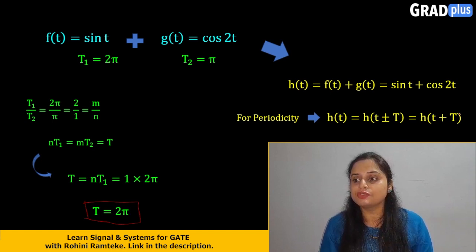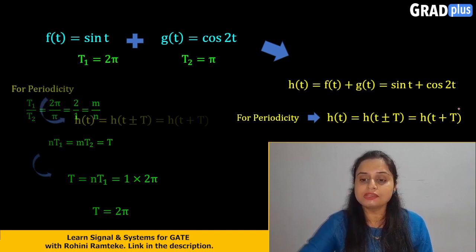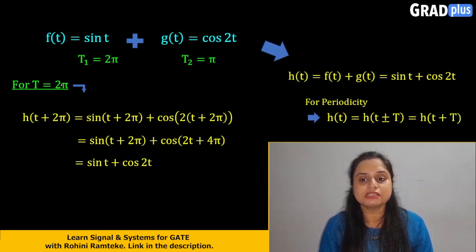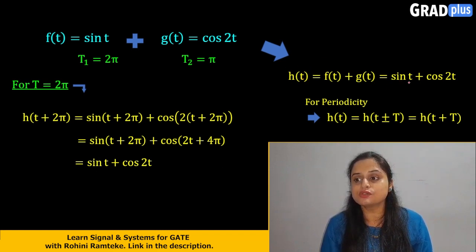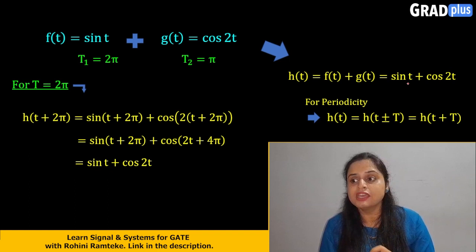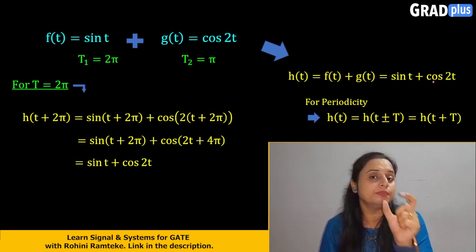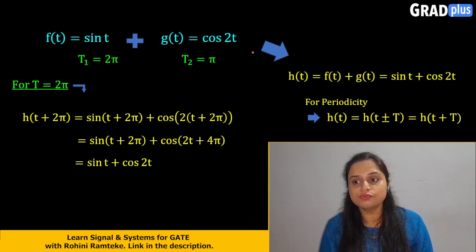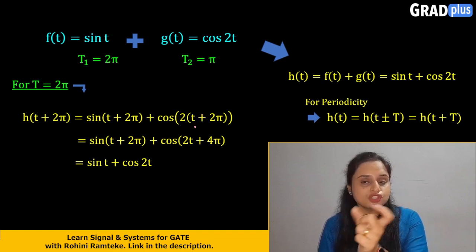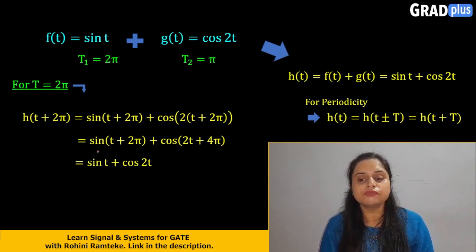Now we have to find h(t + T), which means h(t + 2π). The original output signal is h(t) = sin(t) + cos(2t). In this equation, we have to replace t with (t + 2π). So h(t + 2π) = sin(t + 2π) + cos(2·(t + 2π)) = sin(t + 2π) + cos(2t + 4π).